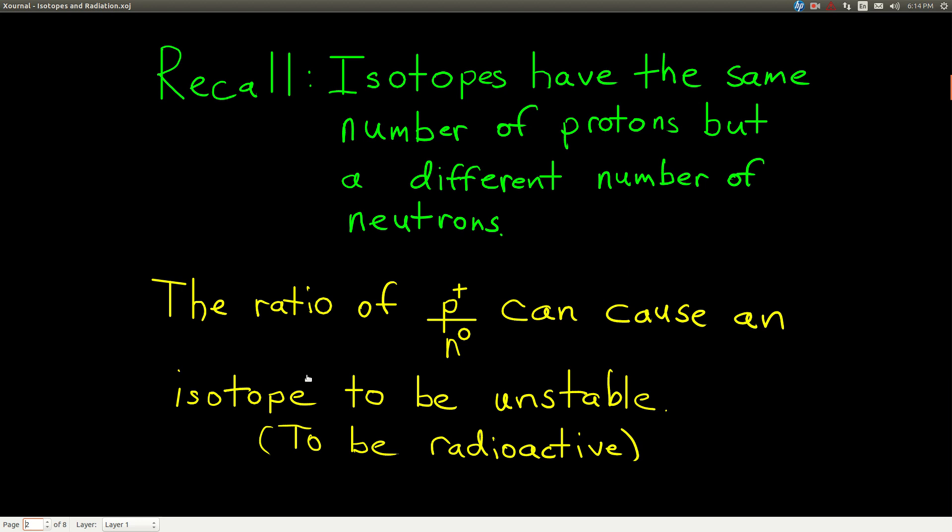Now, when a nucleus is unstable, it's going to do one of two things. It's either going to give off some radiation in order to become more stable, or it's going to absorb something to become more stable. But it's going to do whatever it can to adjust this ratio of protons to neutrons, so that it gets into this range of stability with a stable ratio.